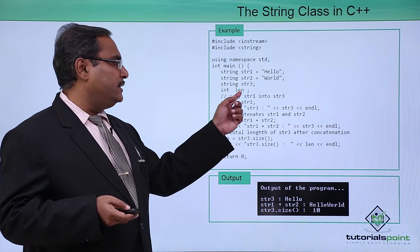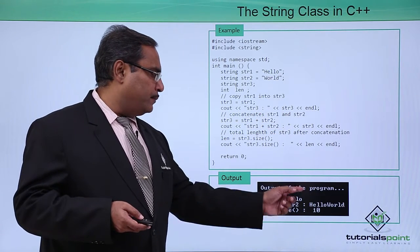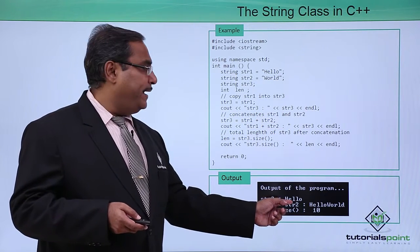int len is there. str3 is equal to str1, so if you print str3, I am supposed to get this hello message getting printed.